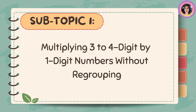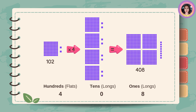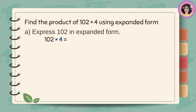Multiplying 3 to 4 digits by 1-digit numbers without regrouping. Let's find the product of 102 times 4 using pictorial representation. Now let's find the product of 102 times 4 using expanded form.